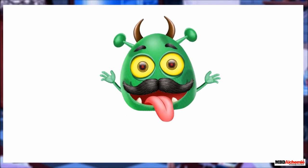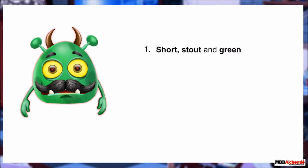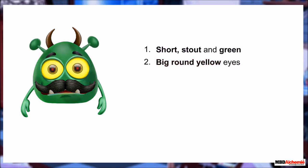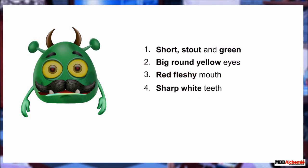Can you now describe Minty Monster? How did Minty Monster look? Was it short and stout and green in color? Yes, you are right — Minty was short, stout, and green. Did it have big round yellow eyes? That's correct — it had big round yellow eyes. Did it have a red fleshy mouth? Yes, you are correct — it had a red fleshy mouth.